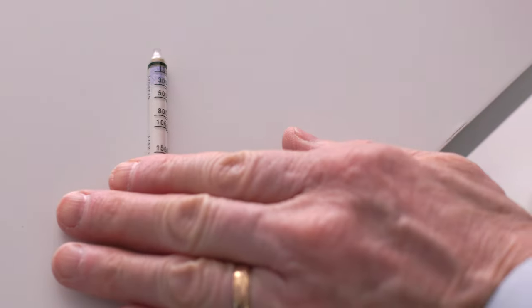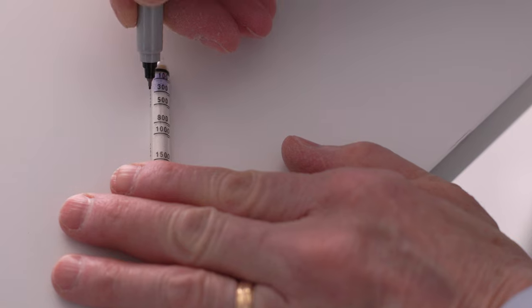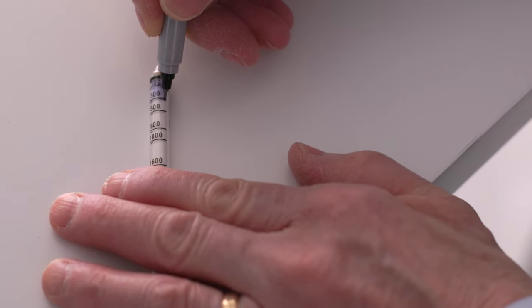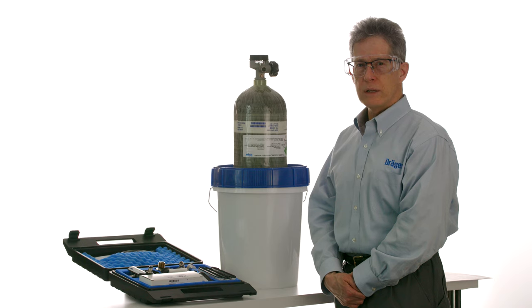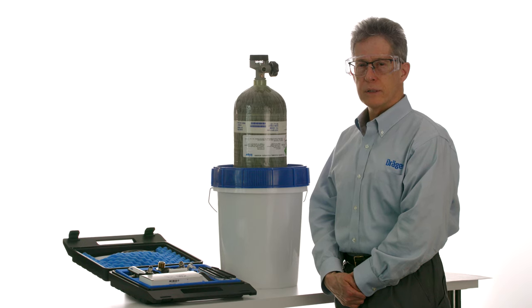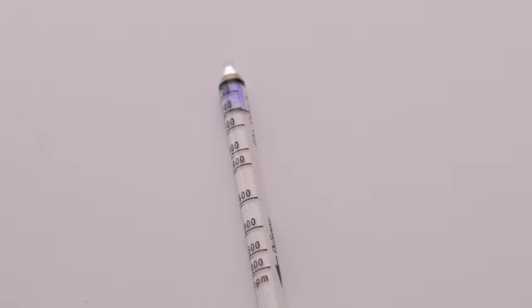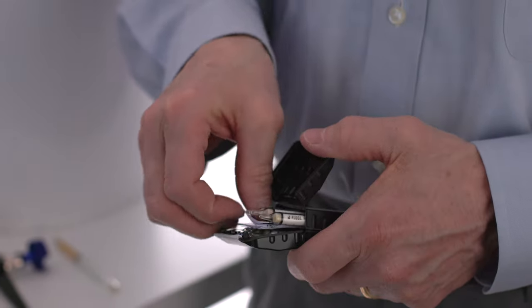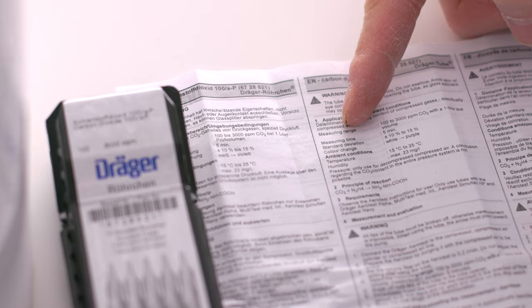Start with the carbon dioxide tube. Using an indelible marker, mark the end point of the bluish-violet discoloration on the carbon dioxide tube. You will always read the total length of the slightest discoloration on a detector tube. In this case, the tube reached 300 ppm. There are instructions for reading results inside each box of Draeger tubes.